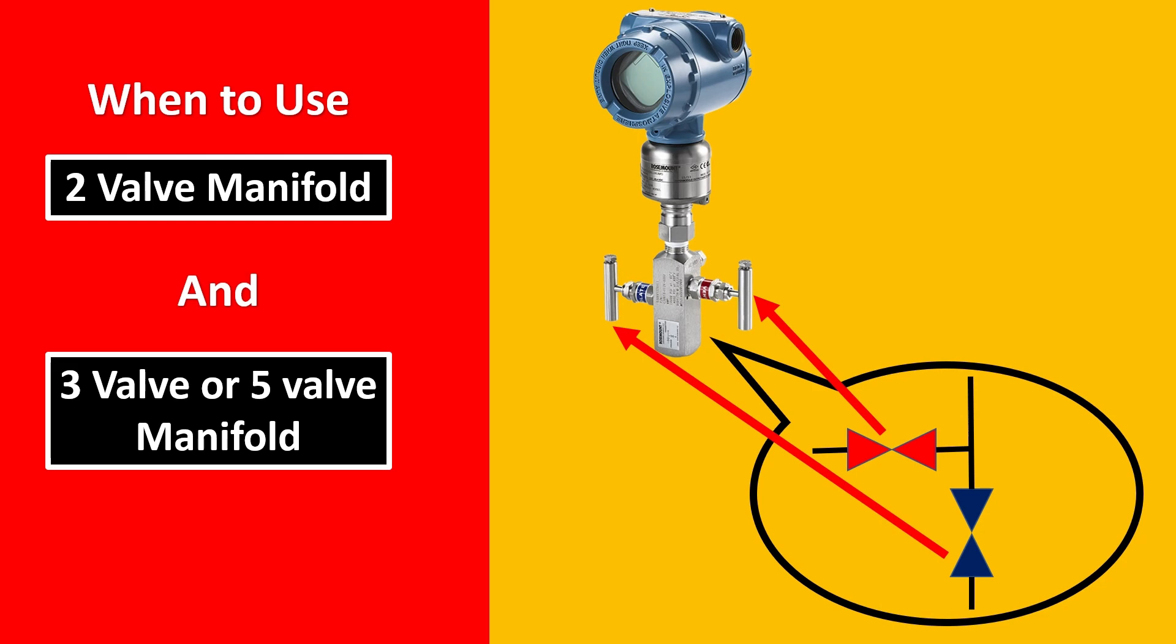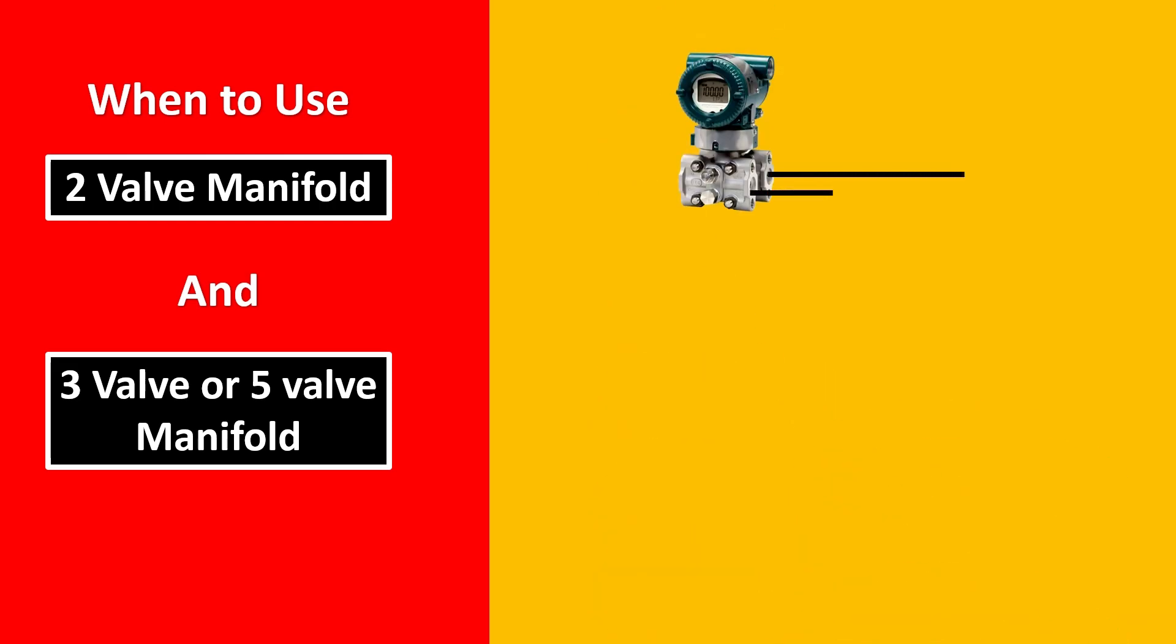Now second is when you have 3 valve manifold. Now 3 valve manifold here is used for DP transmitters. You will have these 2 tappings or these 2 valves is open and this one is closed. But when you want to remove the transmitter out, you would have to close these 2 things. You would have to open the equalization valve. And if you want to vent or drain it, then you might have to use maybe the transmitter vent or drain to release it out either to the atmosphere or to a closed drain system.